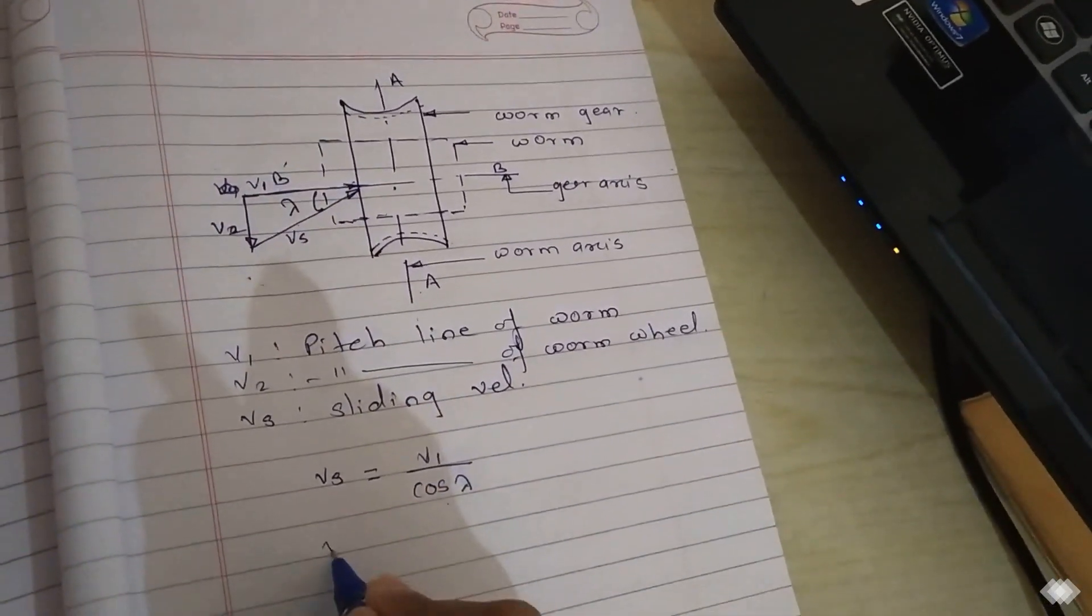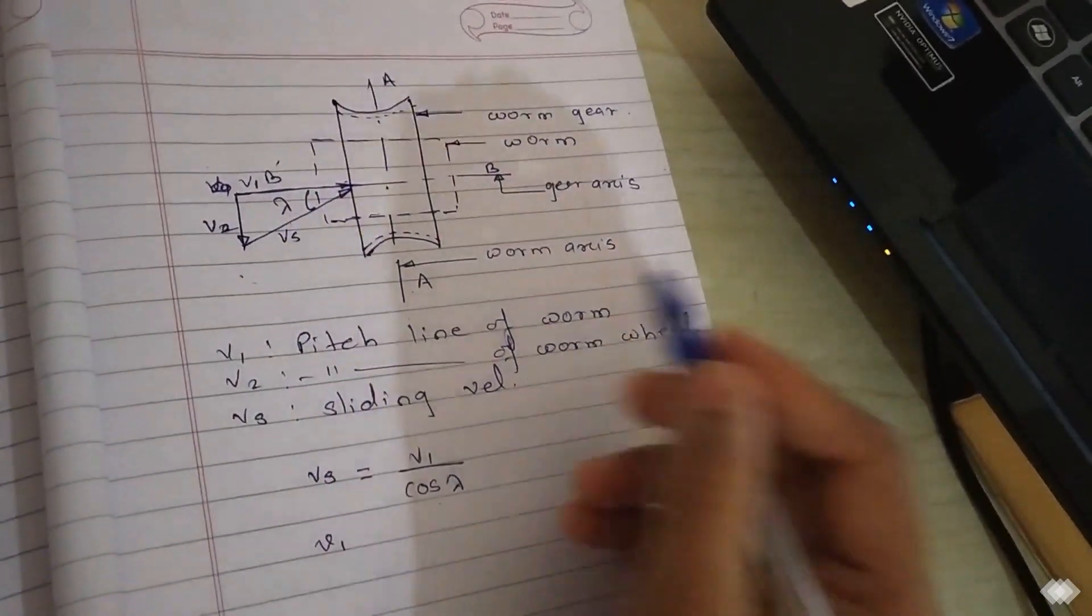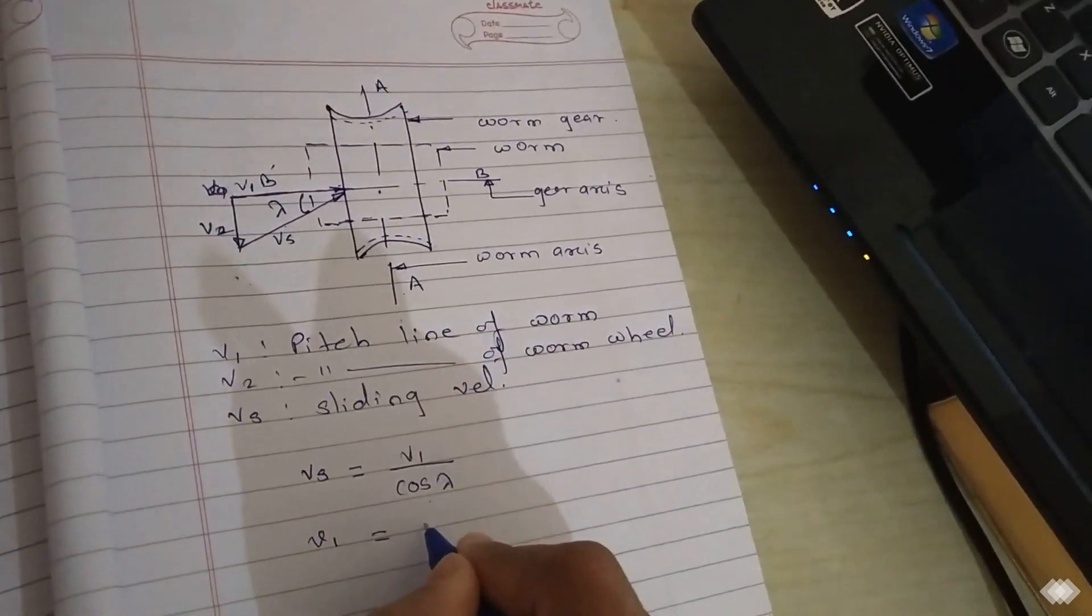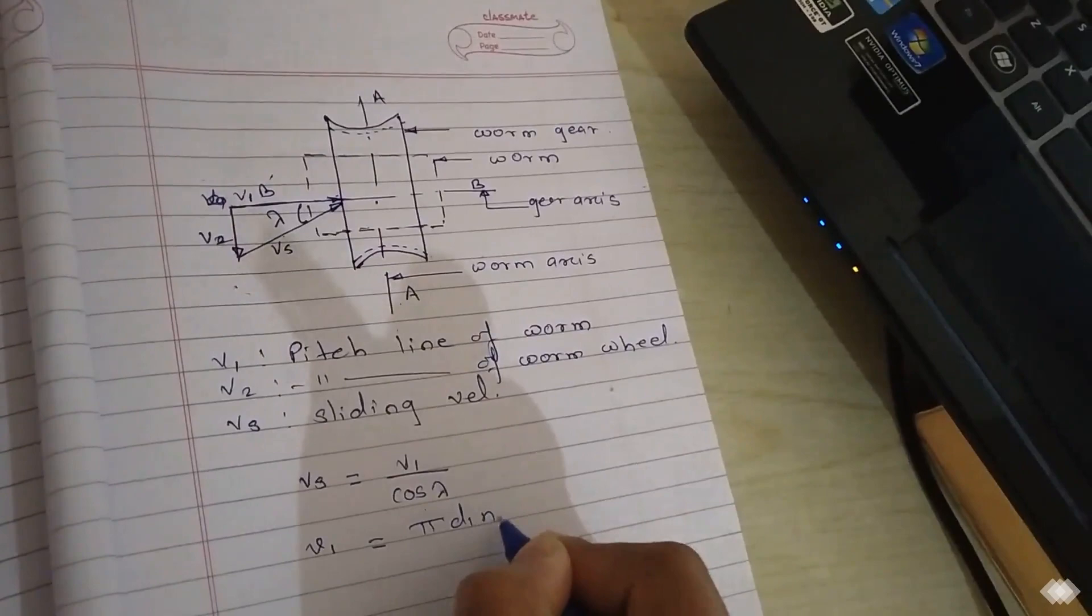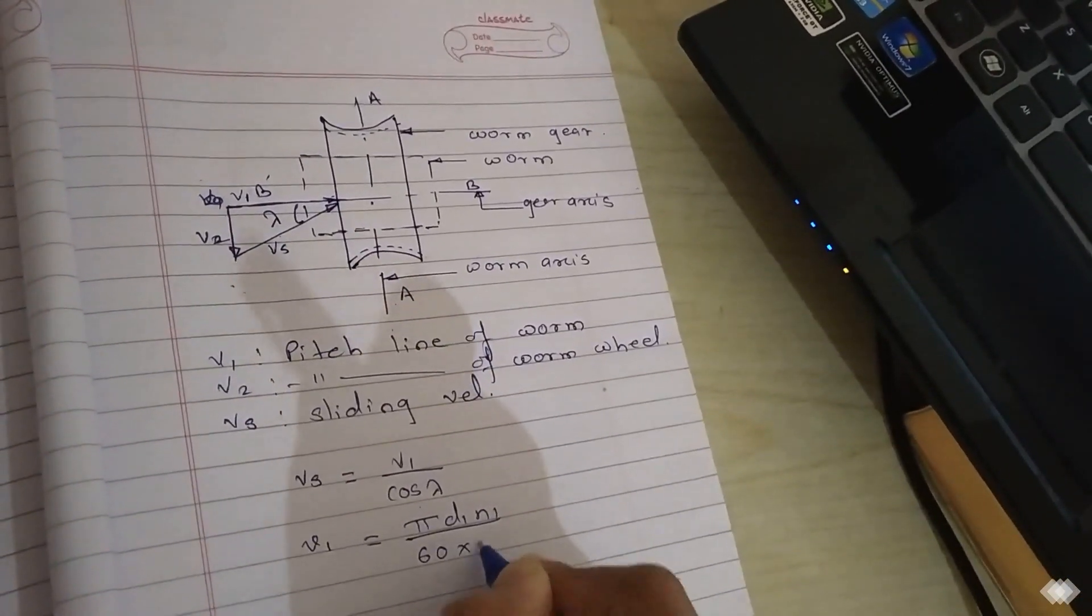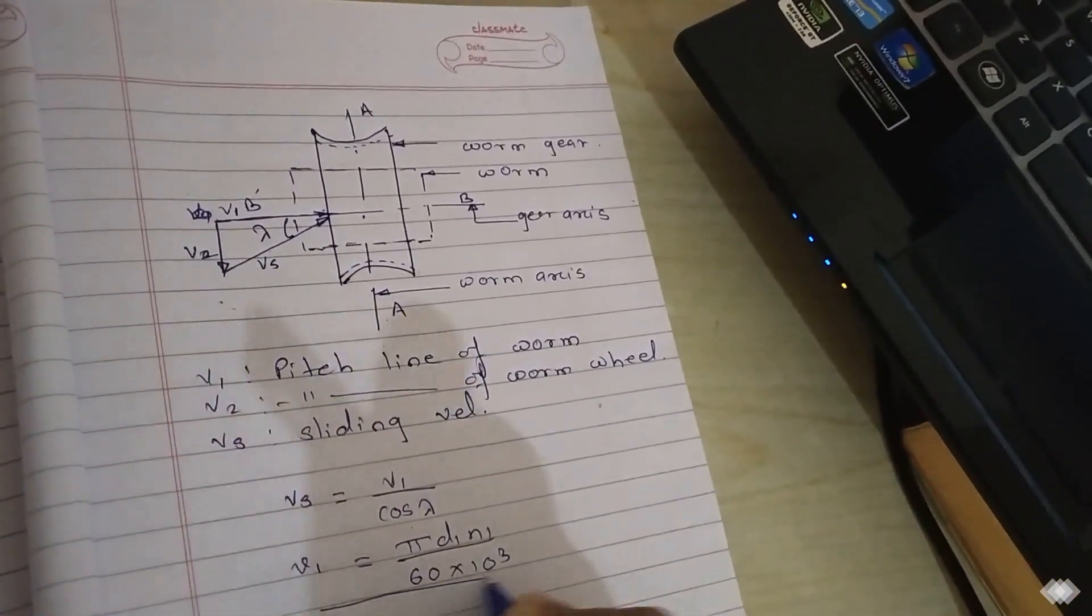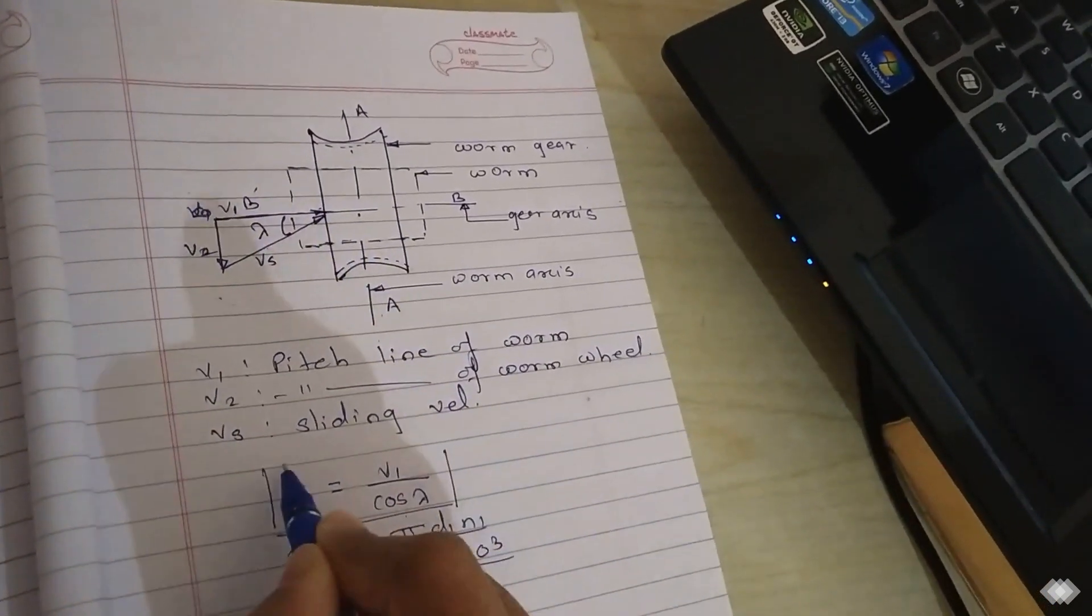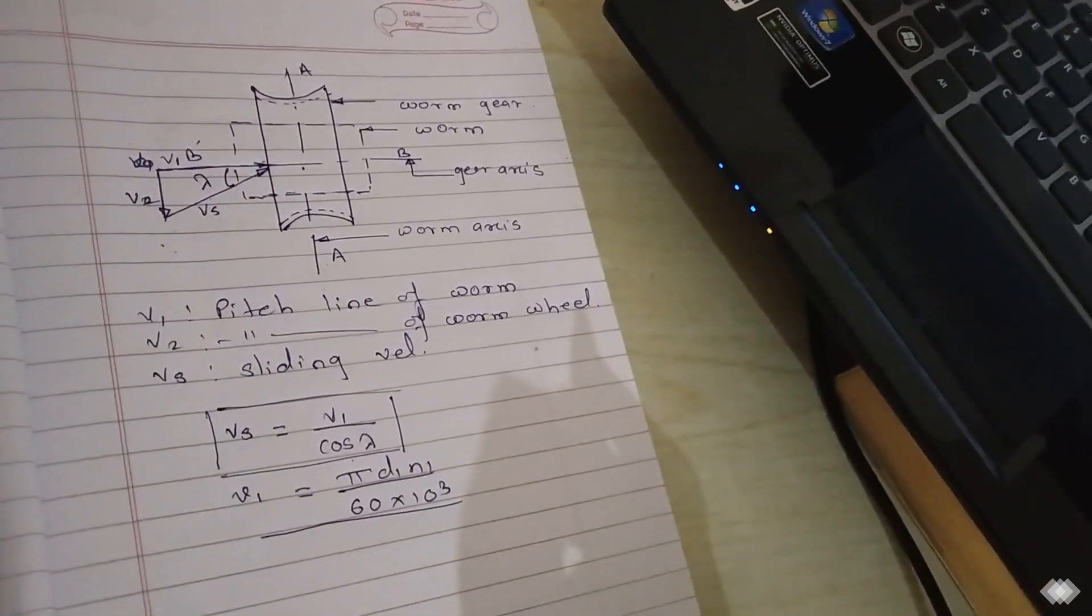The worm is always driver in case of worm and worm gear. So we can calculate it this way: pi D1 N1 upon 60 into 10 raised to 3. So this is the formula of the sliding velocity in worm and worm gear.